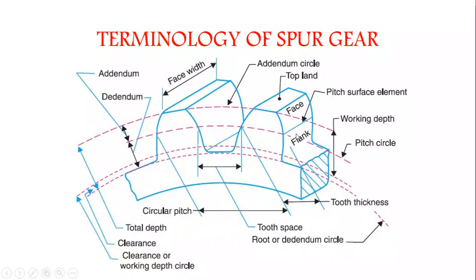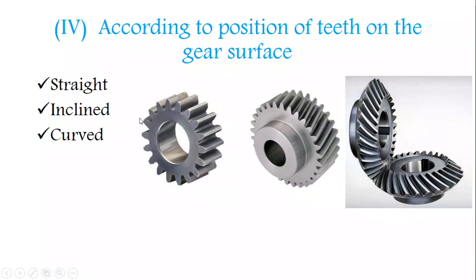Next, the terminology of spur gear. This is the cut section of the spur gear with only two teeth displayed. Using these two teeth, we will see what terms are used technically in gears. The outermost circle diameter is called the addendum circle. The innermost circle is called the dedendum circle.